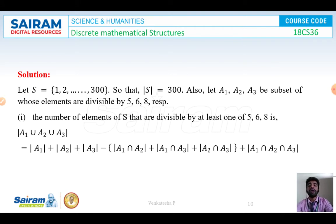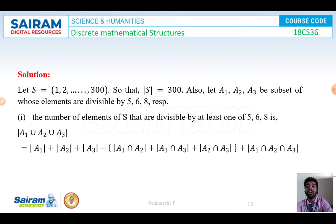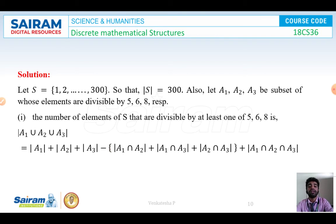The number of elements of S divisible by at least 1 of 5, 6, or 8 is given by the cardinality of A1 union A2 union A3, using the formula: cardinality of A1 plus cardinality of A2 plus cardinality of A3, minus cardinality of A1 intersection A2, plus cardinality of A1 intersection A3, plus cardinality of A2 intersection A3, plus cardinality of A1 intersection A2 intersection A3.